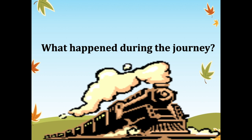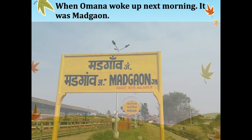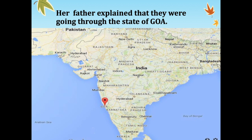Let's see what happened during Omana's journey. Omana fell asleep at night, and when she got up the next morning, it was Madgaon — they had reached Madgaon by that time. Her father started discussing the route of their journey and explained that they were going through the state of Goa.